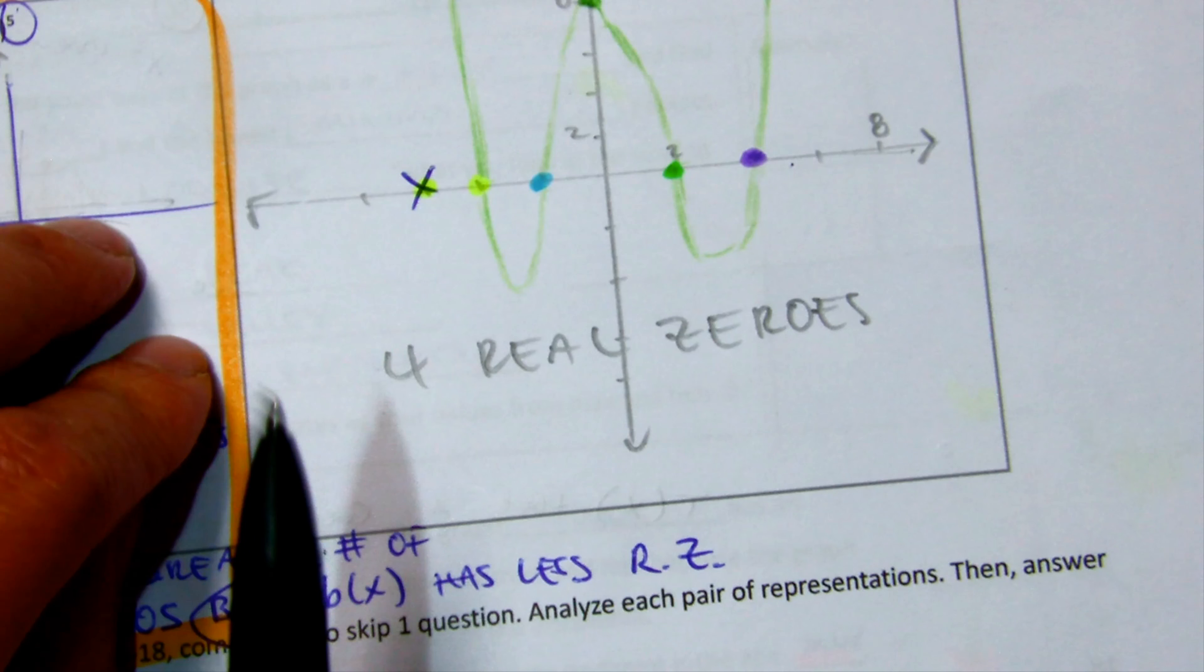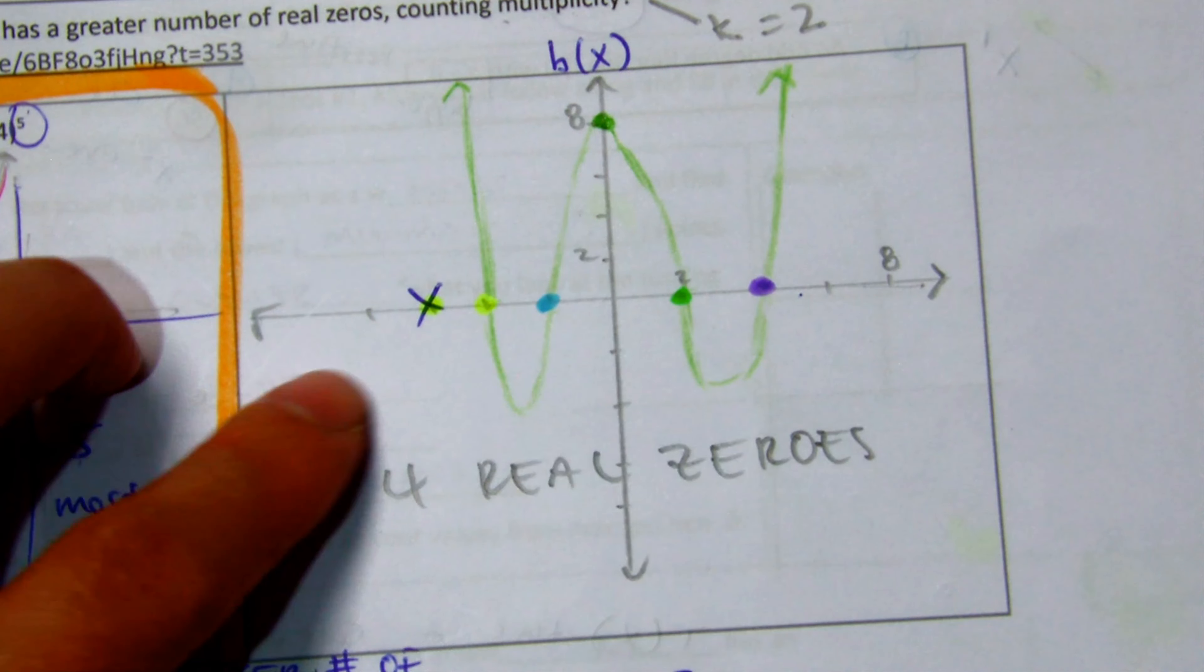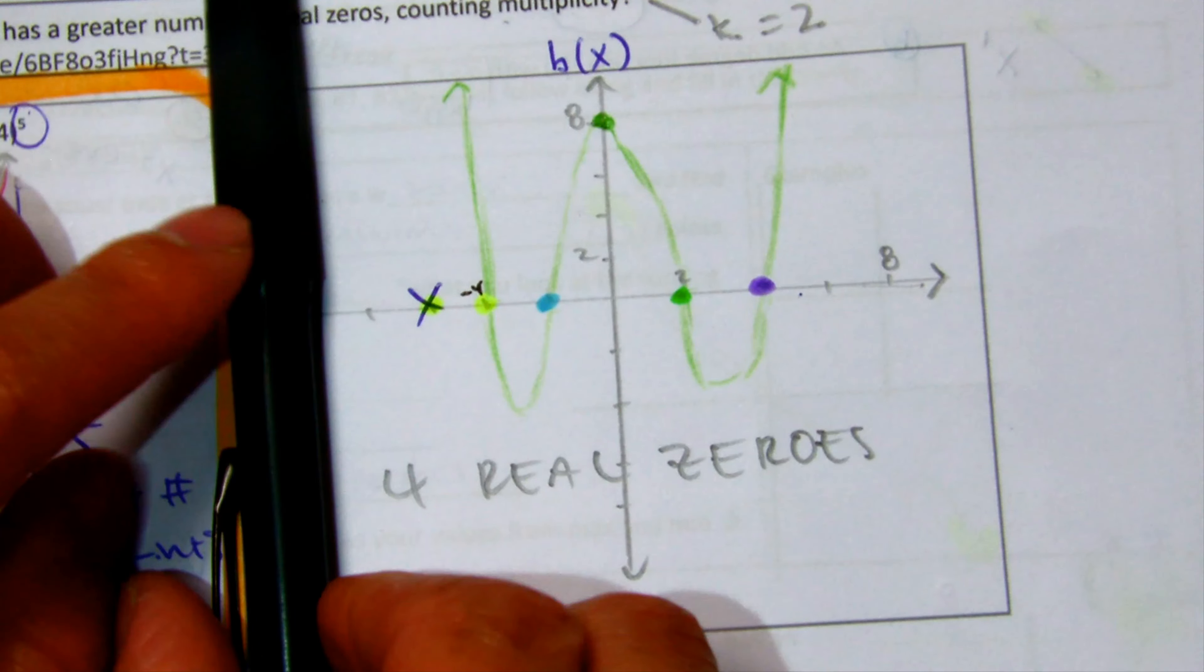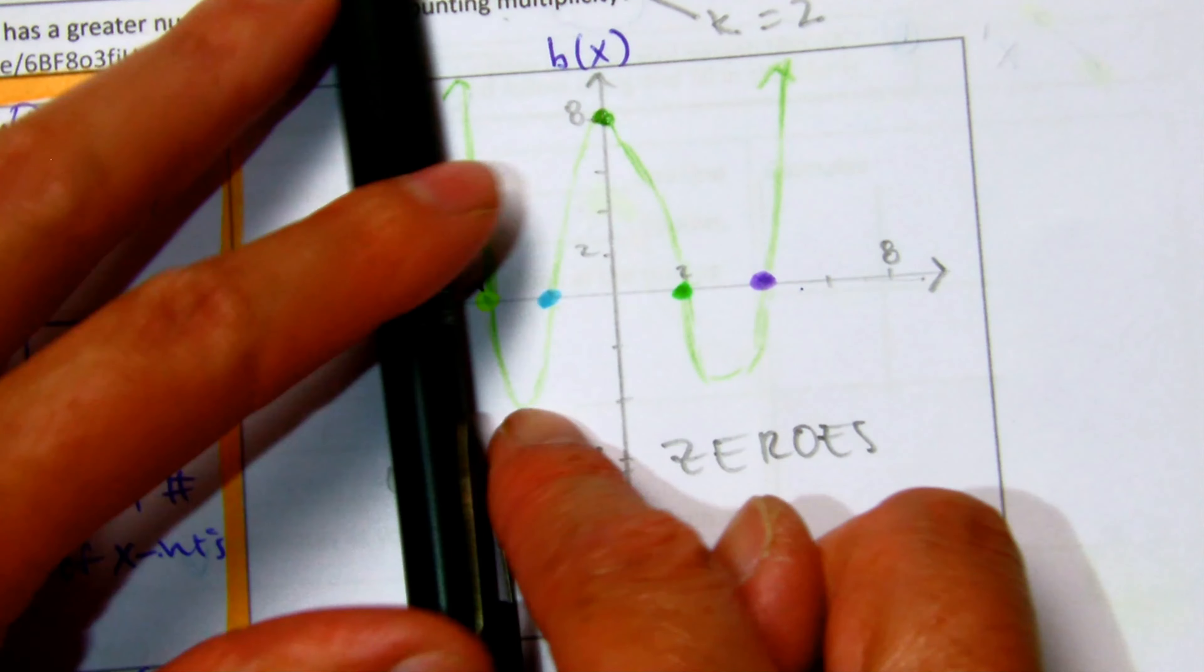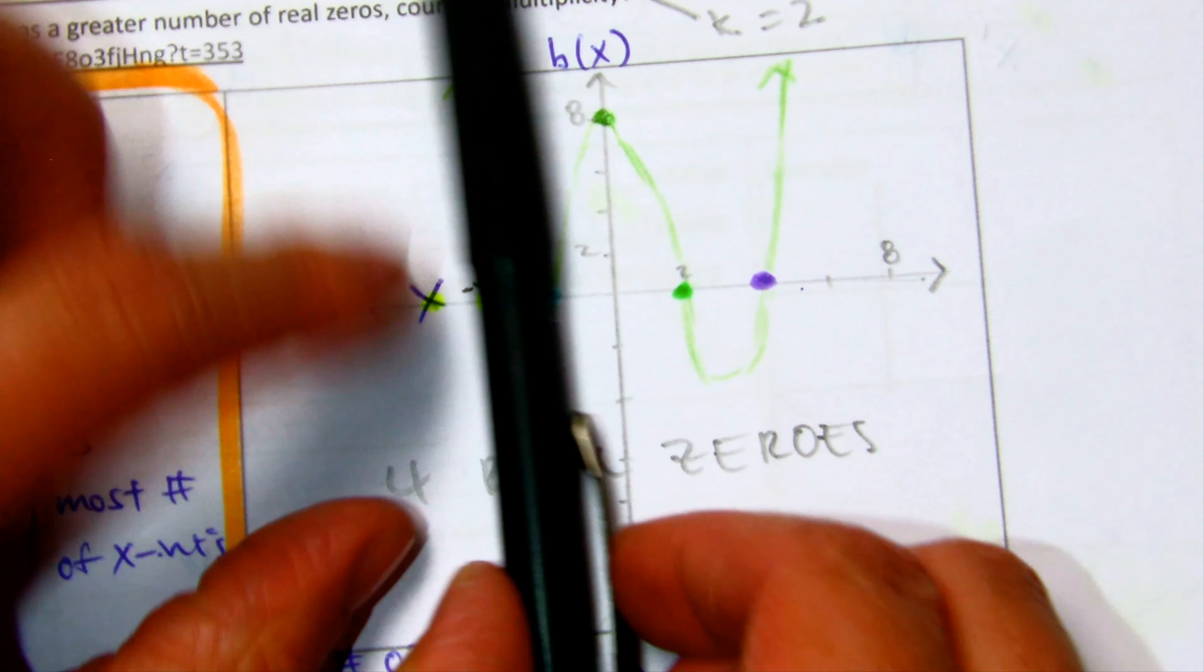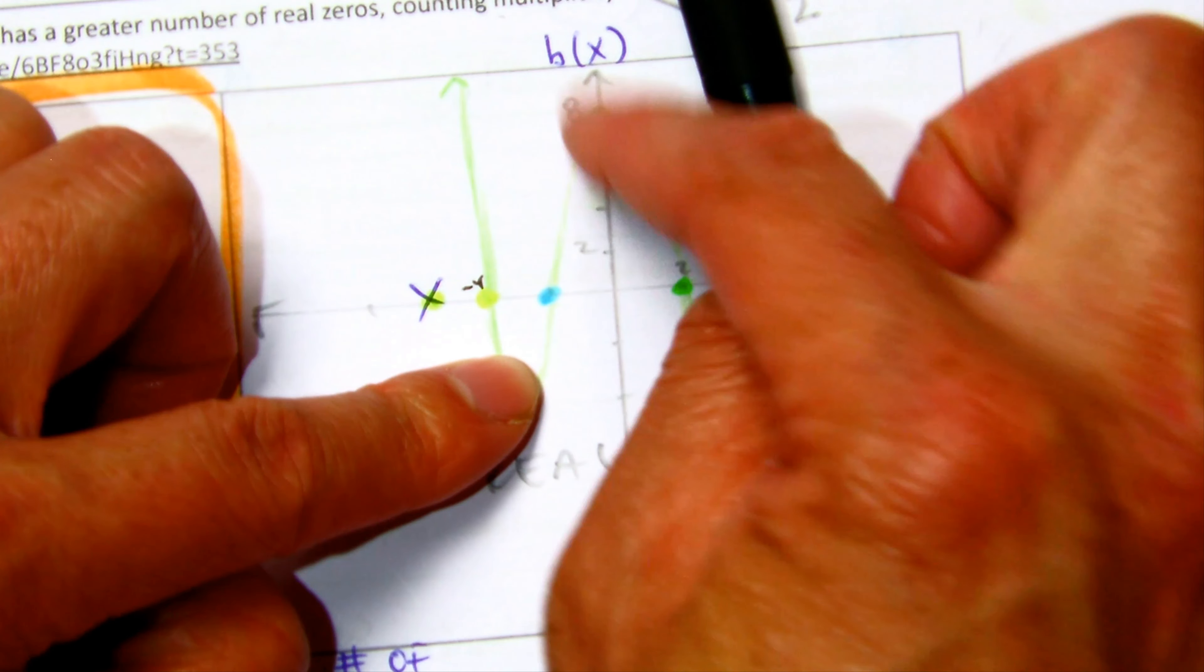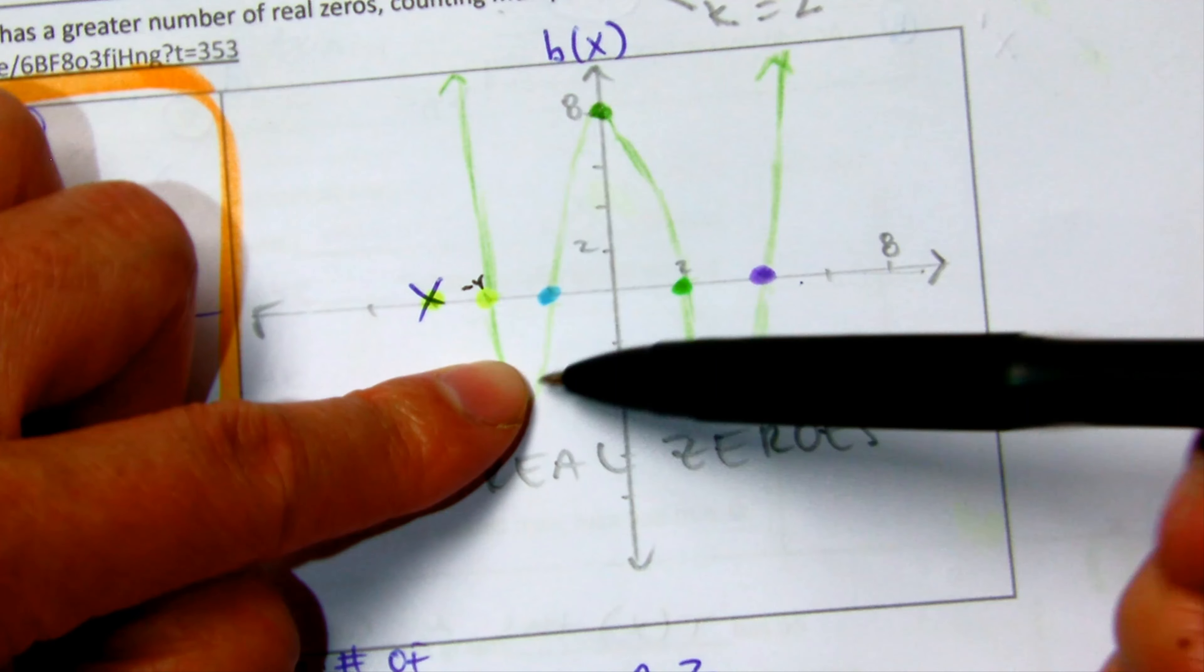This would be an example of decreasing here. Let's just say that is negative 4, so we can say it's decreasing from negative infinity to about that point, so maybe negative 3 and it's increasing from negative 3 to 0. We're using the x-axis numbers. Okay, so that's going up.